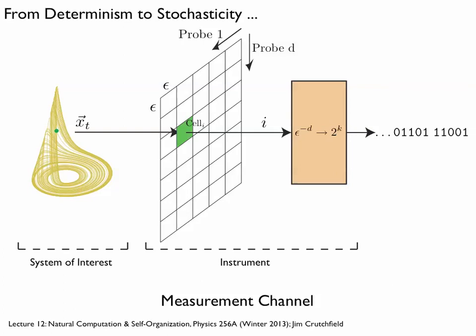So as an observer, you go into the lab and ask your instrument for a measurement. In this picture, at some moment in time, the instrument returns basically the label of the cell in which it finds the state of the dynamical system. The state is projected to this low-dimensional space — you think you're measuring volts, but what's actually returned is a number that's essentially just a label for a cell. We have a finite number of cells, so we have a finite alphabet, which we can encode as binary numbers. As we ask for a series of measurements, we get a time series out — essentially binary strings.